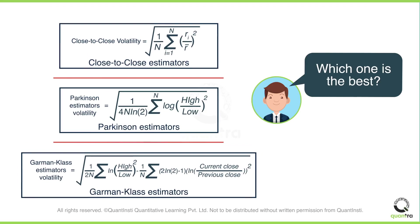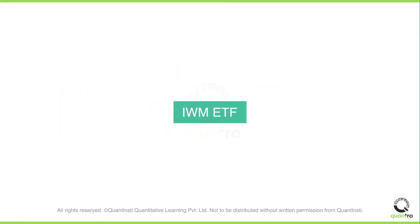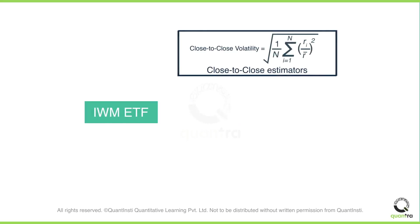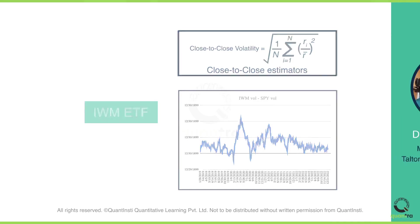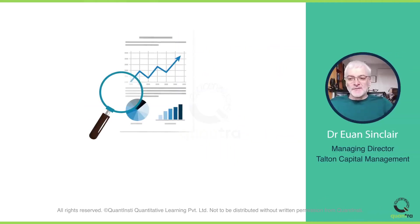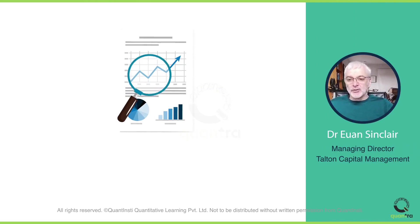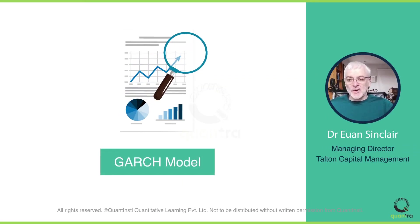To gain a practical understanding of using these estimators, you'll learn how to estimate the volatility of the IWM ETF using the close-to-close estimator and compare it to the volatility of SPY, and we plot the spread between those two. We trade in volatility because it has certain characteristics that make it predictable, and this course will take you through the process of forecasting volatility using GARCH.